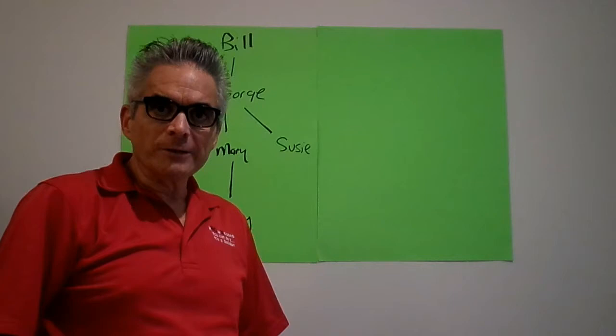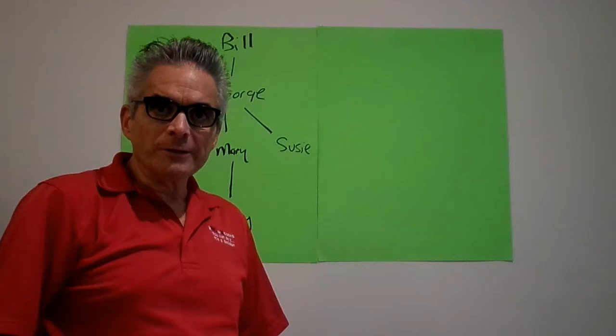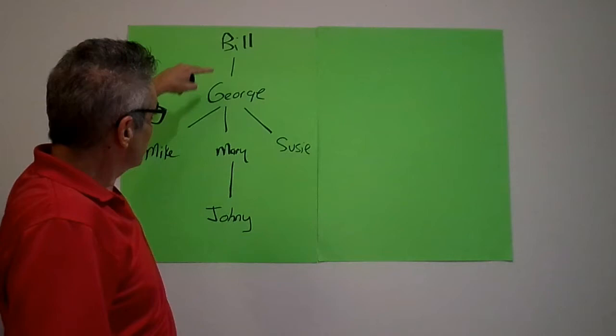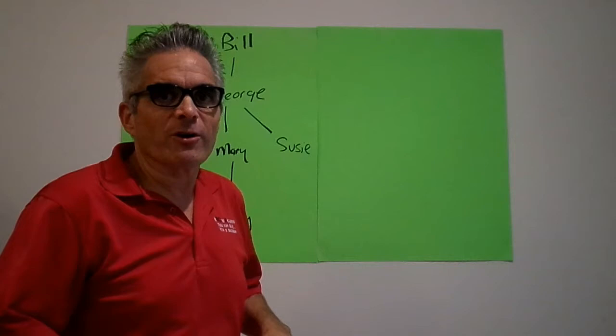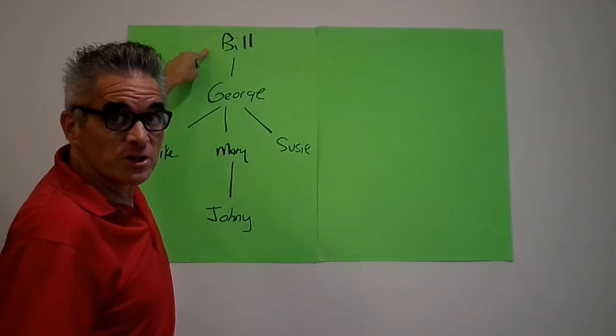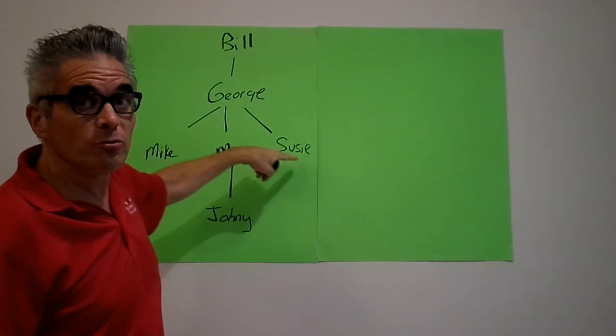Okay with me so far? In a perfect world, Bill sponsors George, George sponsors Mike, Mary, and Susie, and Mary sponsors Johnny. In a perfect world, when Bill receives information, he's going to push it to George, who would push it to Mike, Mary, and Susie, and Mary would push it to Johnny.